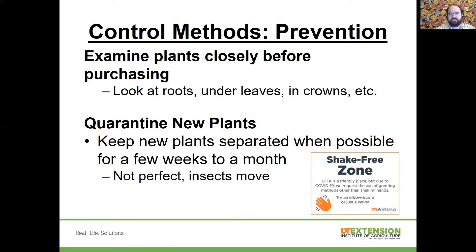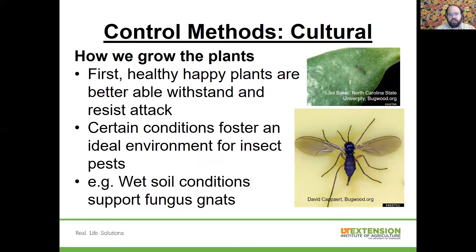Not only are we examining new plants to make sure we're not bringing something in, but we're giving ourselves a time buffer so something doesn't immediately infect other plants we already have. Another good control method is having happy, healthy plants. Most plants in good health and growing well can actually tolerate some insect pressure and damage — a slight infestation may set them back or make them unsightly, but it's not necessarily going to kill them.